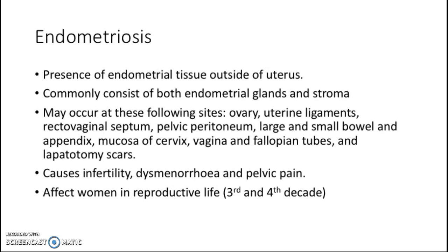First, I'm going to talk about endometriosis. Endometriosis is the presence of endometrial tissue outside the uterus, and it commonly consists of both endometrial glands and stroma, but it can be either glands or stroma alone. The most common site is the ovary, then the uterine ligaments, rectovaginal septum, and other sites. It can cause infertility, dysmenorrhea, and pelvic pain, and it affects women in their reproductive life — the third and fourth decade.